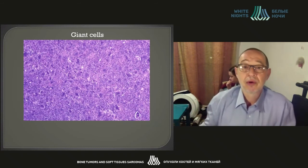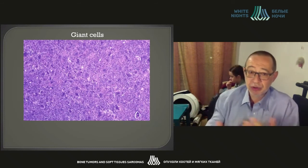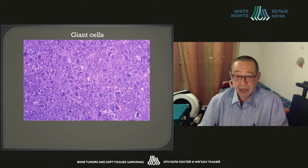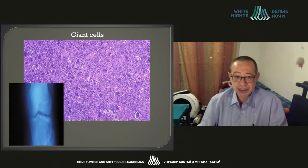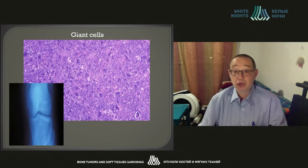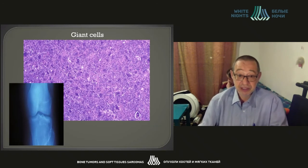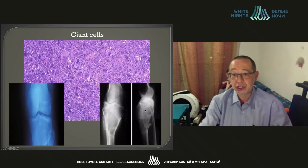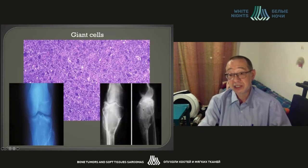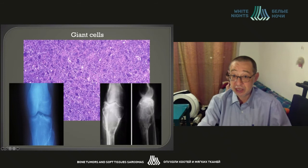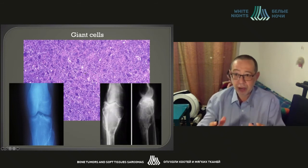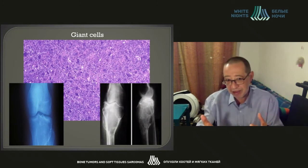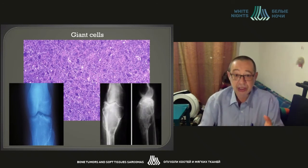Here in front of you, you can see a giant cell-rich tumor — a tumor rich in multinuclear giant cells. Without radiological correlation, it is utterly difficult to judge what this is. On one hand, it could be a giant cell bone tumor, as seen in this X-ray image. On the other hand, it could be a giant cell-rich osteosarcoma. The microscopical appearances are similar and can overlap, which can result in misinterpretation of microscopical findings.